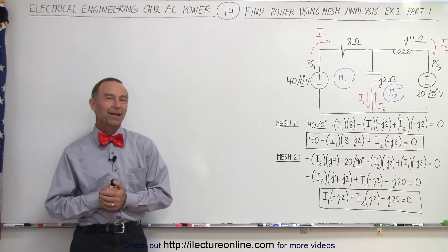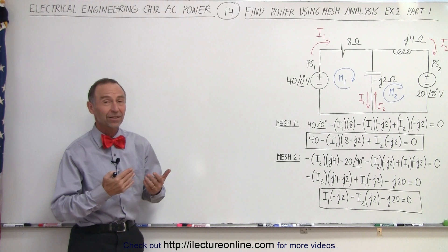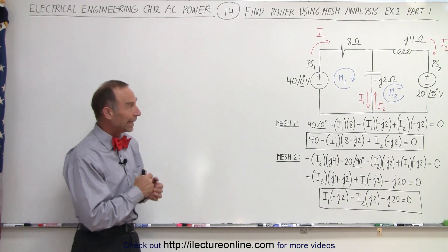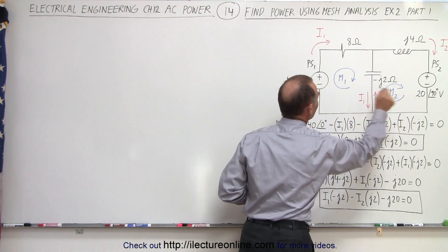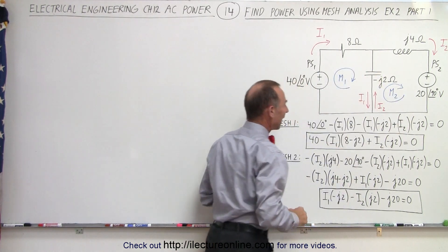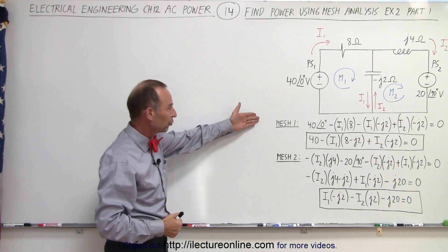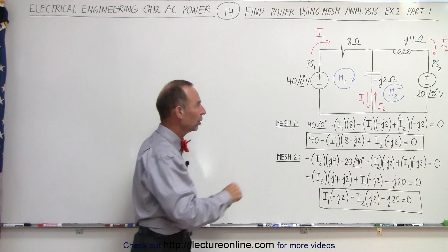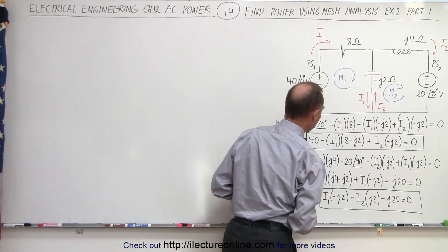Welcome to our lecture online. Nothing like examples to help us understand the material, so here's one more example. In this case we're going to have two power supplies and we have a resistor, an inductor, and a capacitor. I've already worked out the two mesh equations, mesh 1 and mesh 2. We're going to go around each mesh in a clockwise direction.